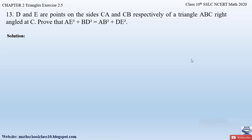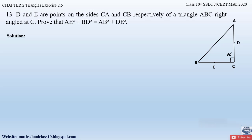There is no figure given in this question, so first of all let us draw the figure. Since they have mentioned triangle ABC which is a right-angle triangle at C, let us draw triangle ABC with angle C equal to 90 degrees. D and E are points on the sides CA and CB respectively, so we mark D on side CA and E on side CB. To obtain AE², join AE; to obtain BD², join BD; and to obtain DE², join DE.